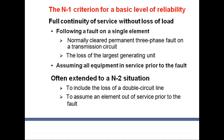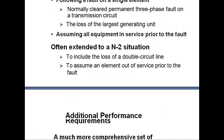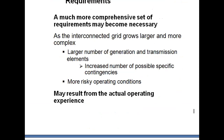If an N2 situation occurs, that means to include the loss of a double circuit line, assuming an element is out of service prior to the fault. Additional performance requirements state that a much more comprehensive set of requirements may become necessary as the interconnected grid grows larger and more complex, with a larger number of generation and transmission elements, an increasing number of possible specific conditions, and more risky operating conditions resulting from actual operating experience.